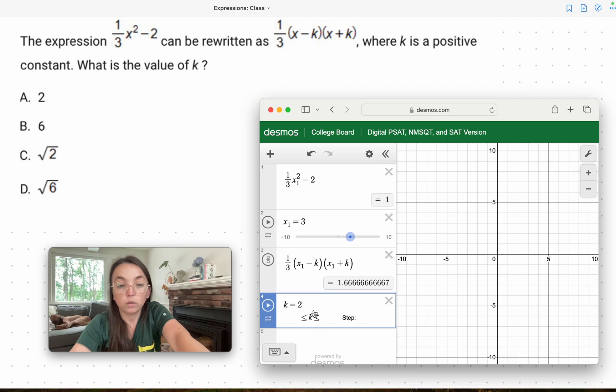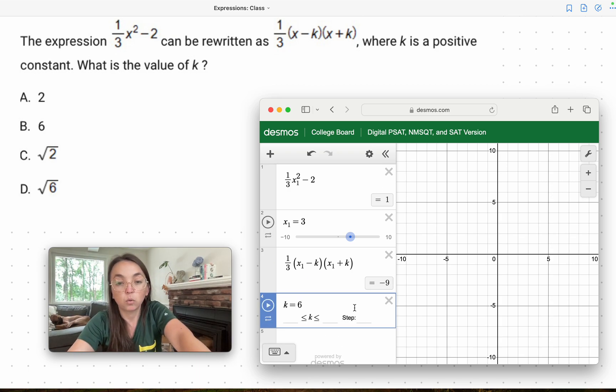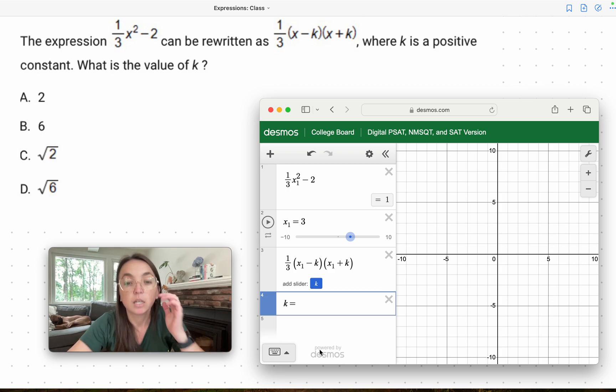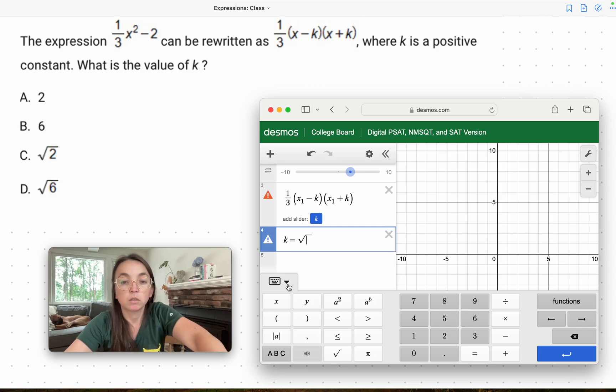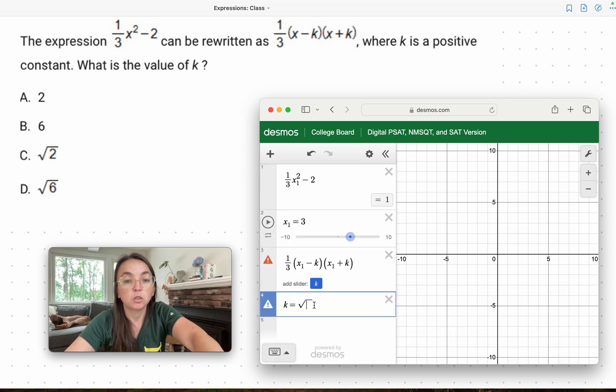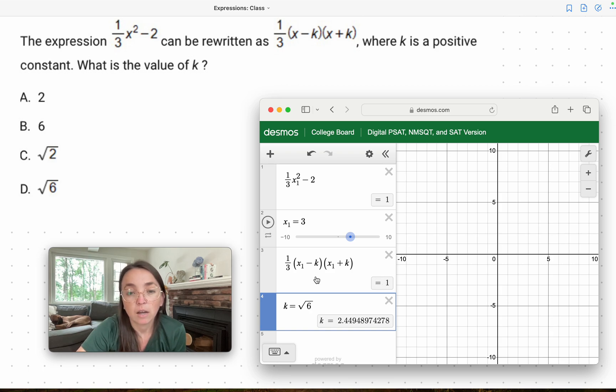Nope. So these are not equivalent. So k is not 2. 6, still not equivalent. k is not going to be 6. Square root - so in Desmos, we can show the keypad. We can choose the square root symbol. Let's close the keypad. C is √2. So square root 2. 2.3 is not equal to 1. Lastly, √6. Square root 6. There we go. Now the right side of the equation is equal to the left side of the equation. So the answer is D.